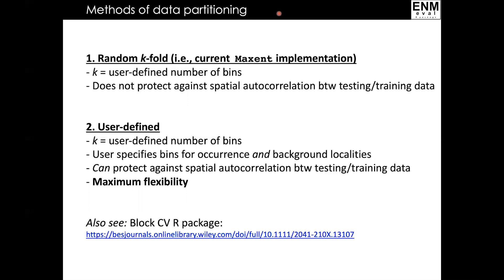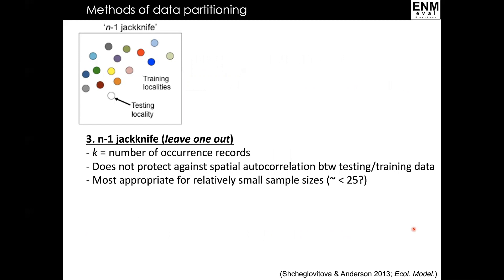I'll point out the R package BlockCV, which could be used in conjunction with ENM-Eval to partition data in advance and then evaluate the models built with those data partitions. The third method is the N-1 jackknife, or leave-one-out. With this method, each occurrence point falls into its own bin — we use all but one record for training the model, test with the single withheld point, and iterate for all points. This method is only feasible with relatively small sample sizes and does not help reduce spatial autocorrelation.